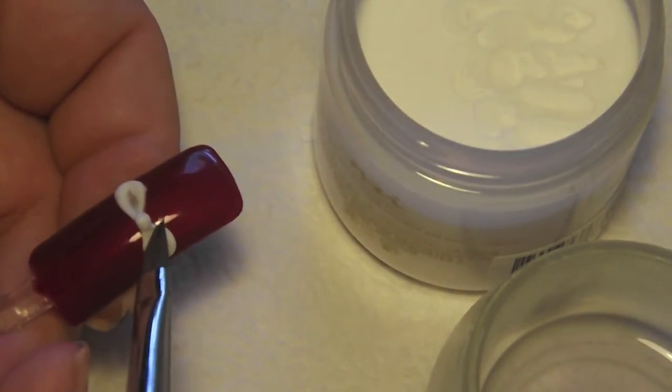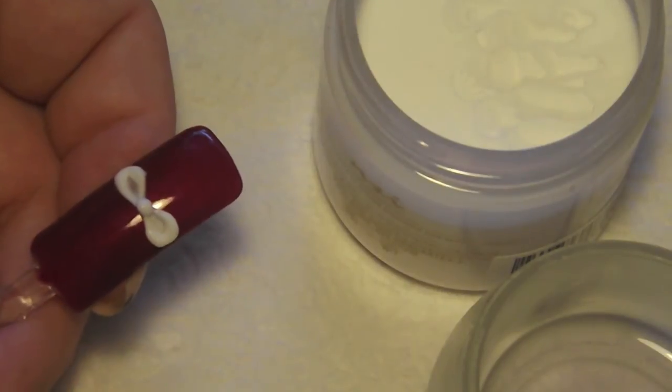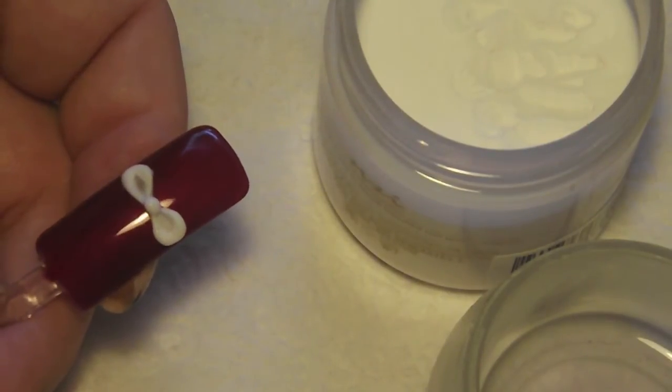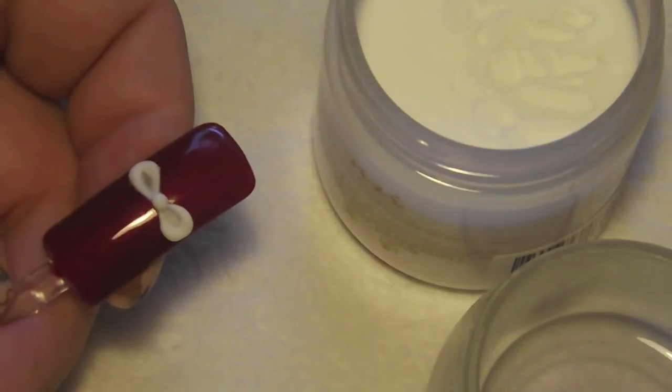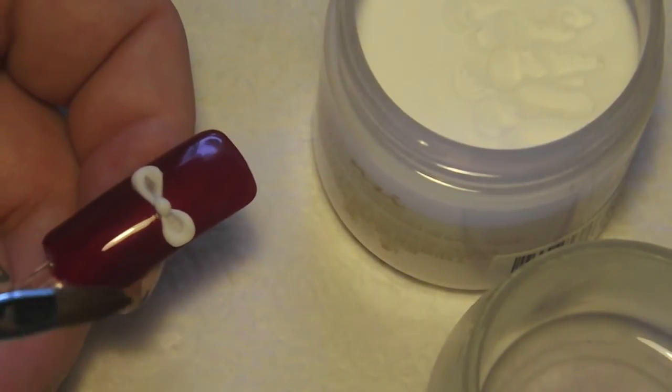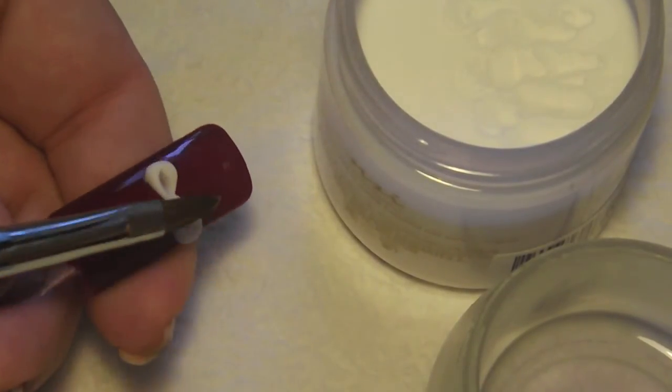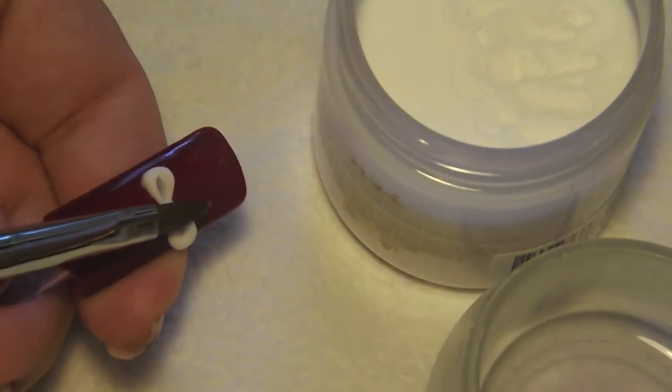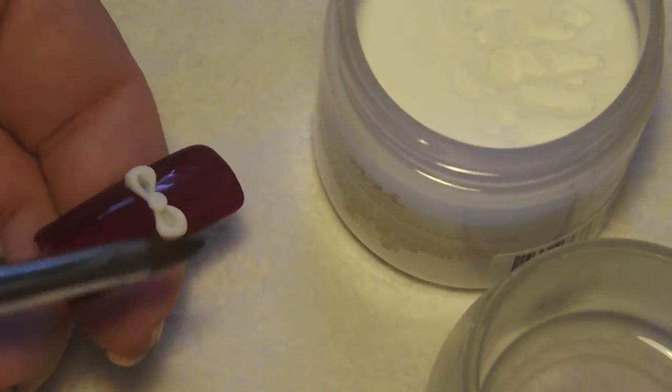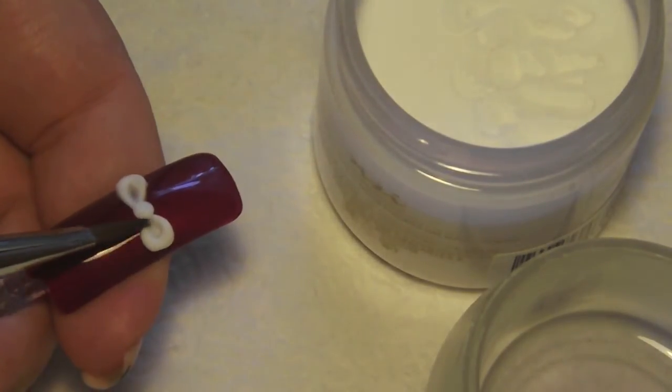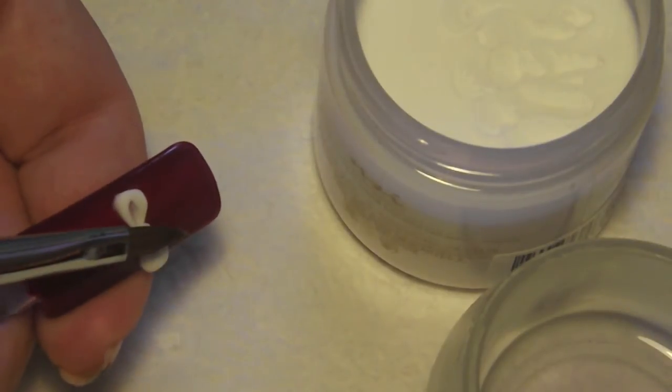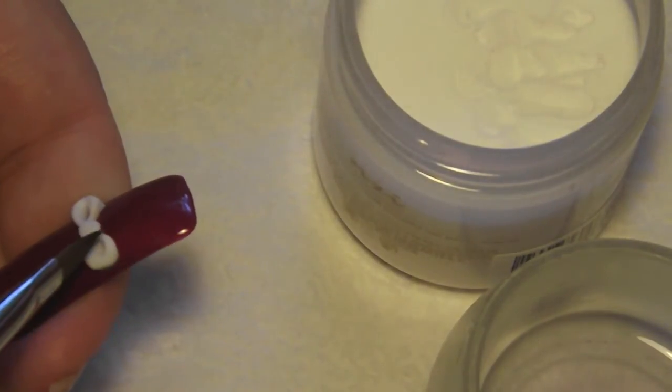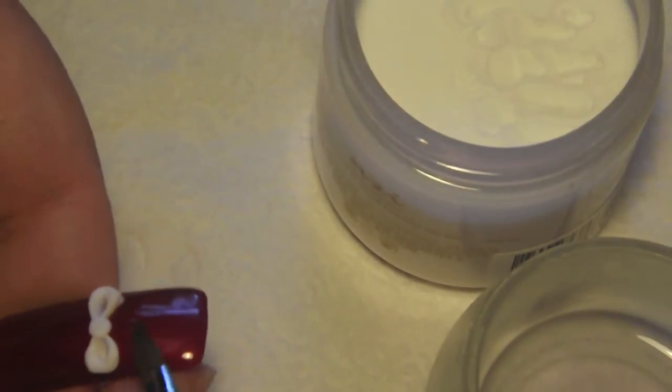You're going to let that come to consistency again. Once it goes a little bit matte, you're going to use the belly of your brush, and you're just going to push that down, make it a little bit flat. If you need to, you can go in and perfect the circle, or scoot it over if you need to.